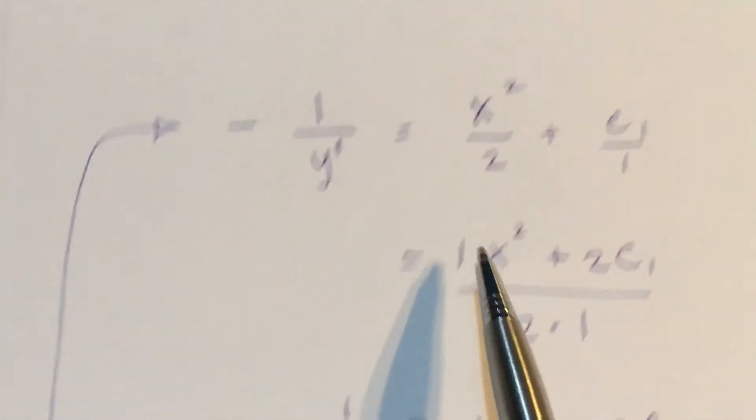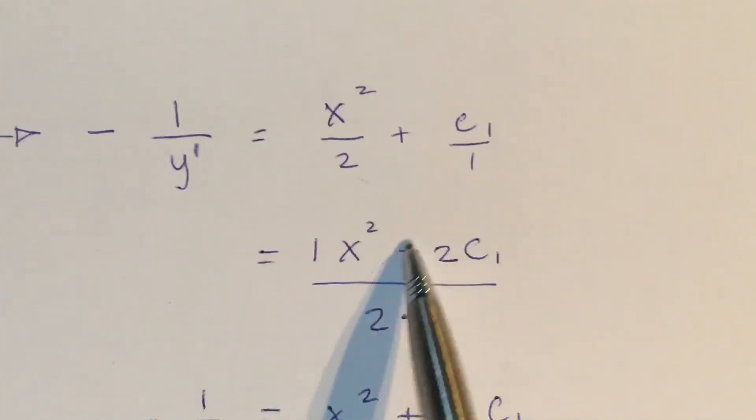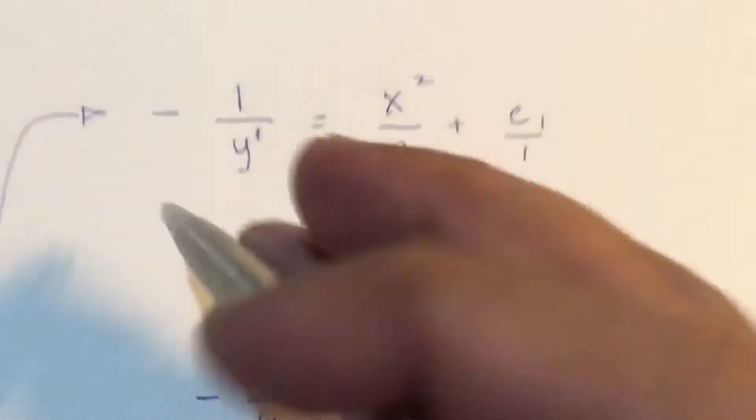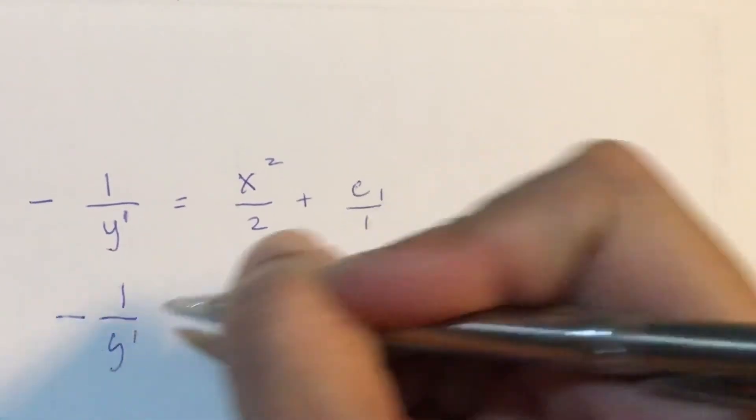Copy this, and after that, you can just write this. I forgot to write this. Negative. I'm sorry.